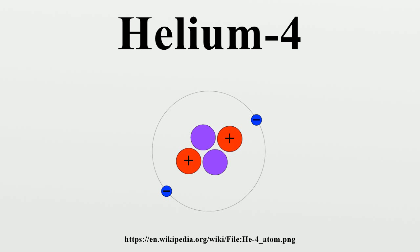Its nucleus is identical to an alpha particle and consists of two protons and two neutrons. Alpha decay of heavy elements in the Earth's crust is the source of most naturally occurring helium-4 on Earth, while it is also produced by nuclear fusion in stars.